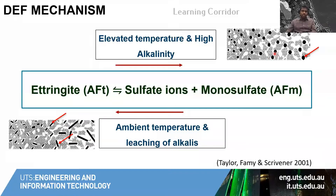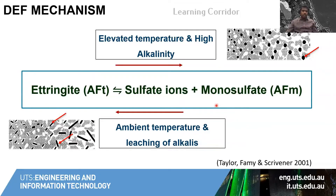You can see here some black dots which graphically represent the monosulfate in the cementitious system. During service time, concrete will be at ambient temperature, and when enough moisture is available in the surroundings, the alkalis in the concrete tend to leach out from the cementitious system. In those conditions, this monosulfate will react with the sulfate ions in the system and precipitate ettringite back into the system.